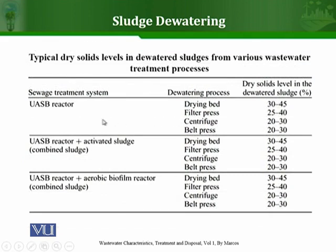Moving on to UASB reactors — the sludge produced from these reactors can be dewatered by all four processes, and these are the dry solid levels achieved after dewatering.